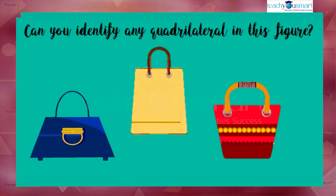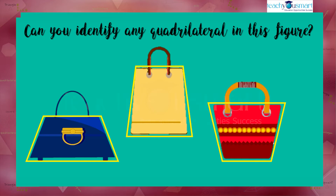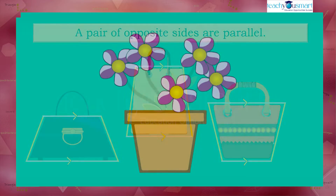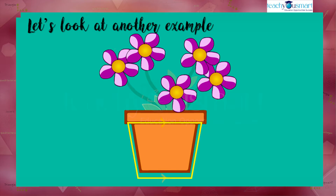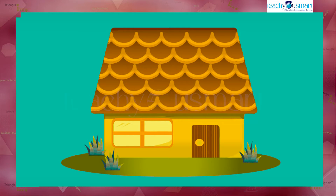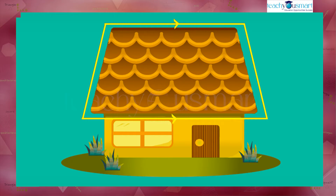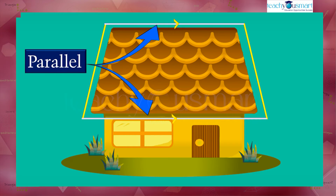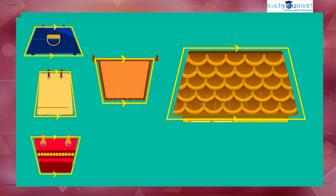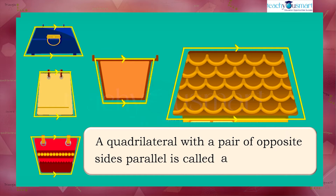Can you identify any quadrilateral in this figure? Yes we can, but there's something special about it — a pair of opposite sides are parallel. Looking at another example, we find a similar quadrilateral where a pair of opposite sides are parallel. Even this roof has a pair of opposite sides parallel. Such a quadrilateral with a pair of opposite sides parallel is called a trapezium.